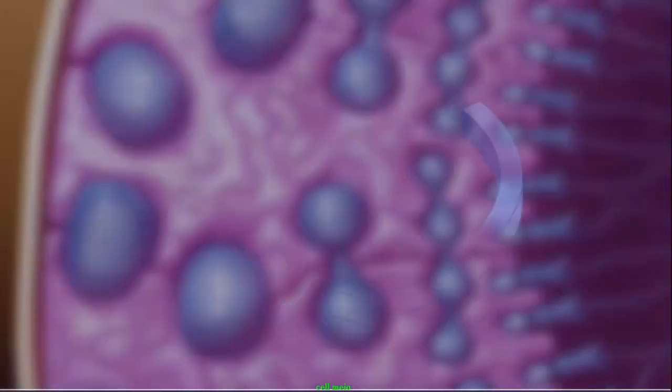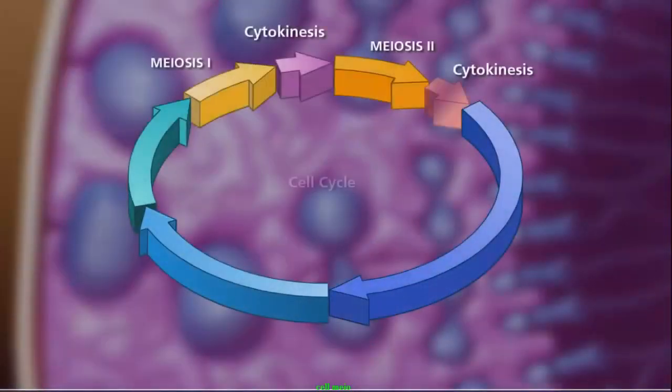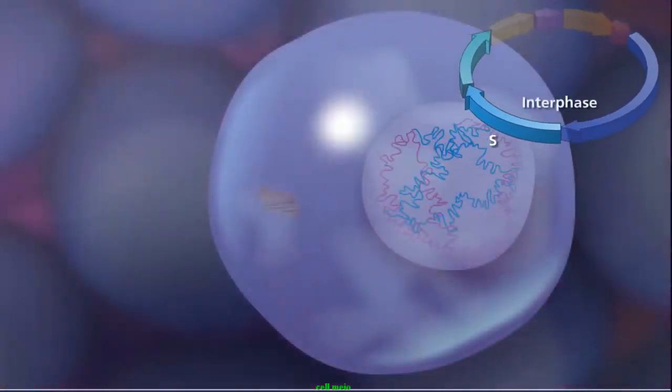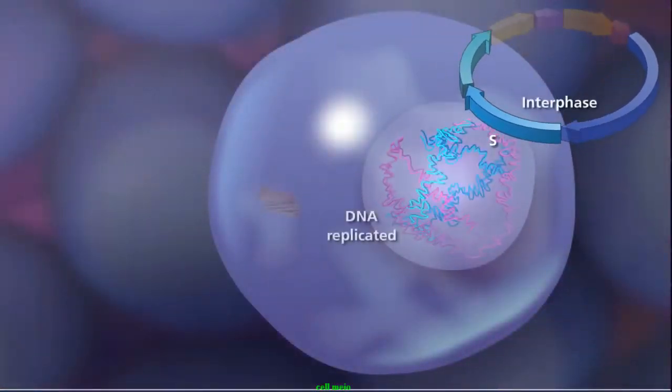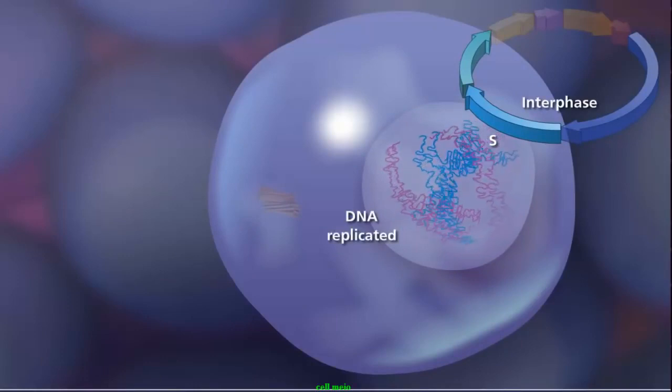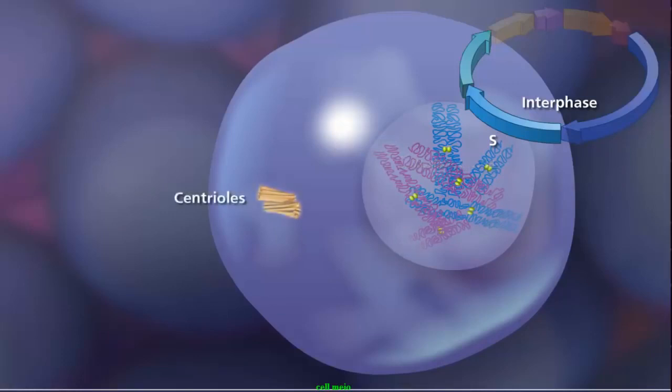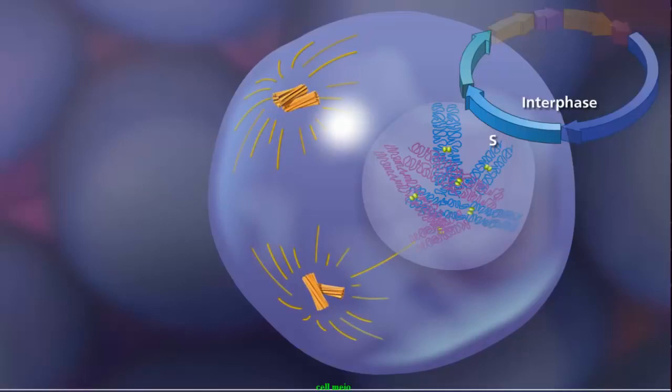As in mitosis, meiosis begins after a cell has successfully completed the G1, S, and G2 stages of interphase. During the S phase of interphase, the DNA is replicated, producing two copies of each chromosome called sister chromatids. The paired centrioles in the cytoplasm duplicate and begin extending microtubules that will form the meiotic spindle.